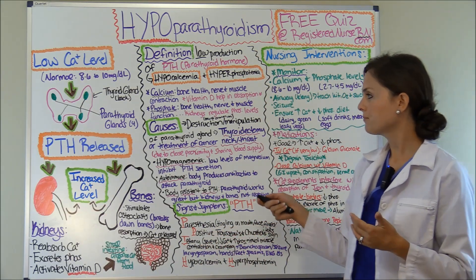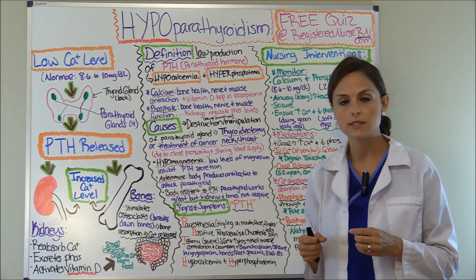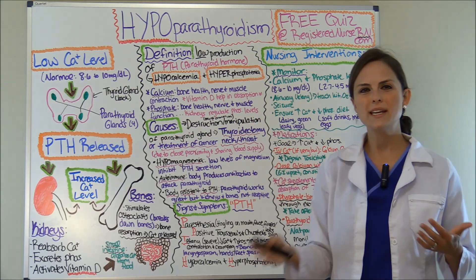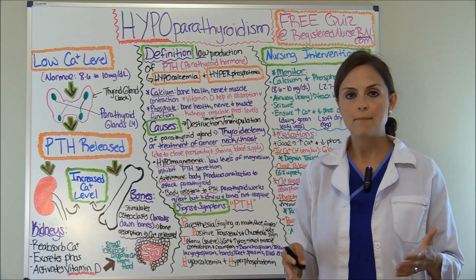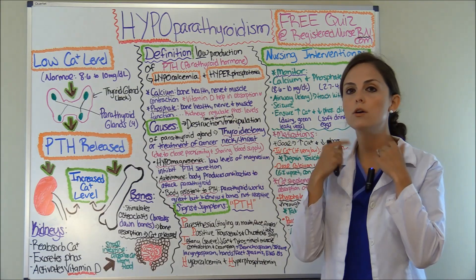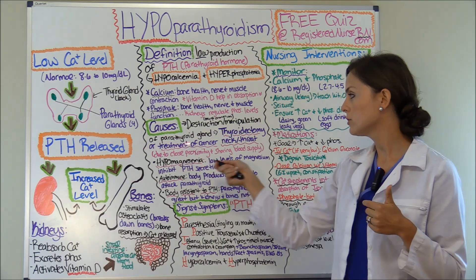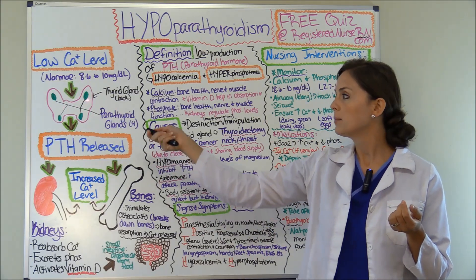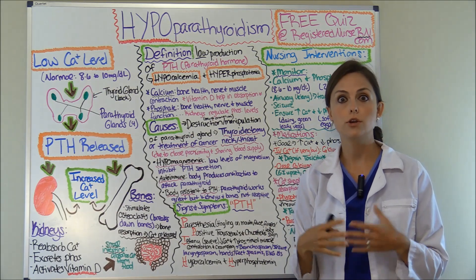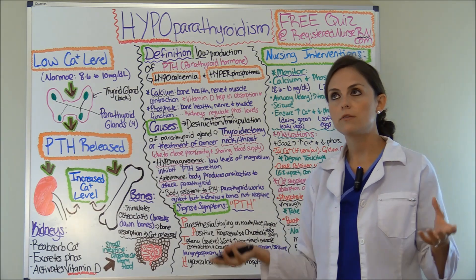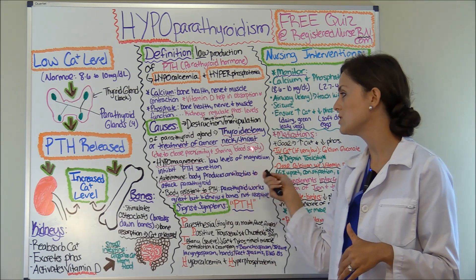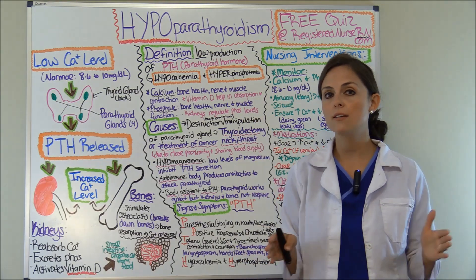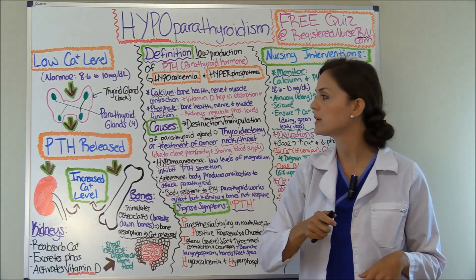The biggest and most common cause of hypoparathyroidism is destruction or manipulation of the parathyroid glands. This generally happens during a thyroidectomy — removal of the thyroid gland — or treatment of cancer through the neck or throat. Because the parathyroid glands are very close to the thyroid and share the same blood supply, surgeons can inadvertently damage them. So after a thyroidectomy, you want to monitor calcium levels closely because the patient may have been sent into hypoparathyroidism.